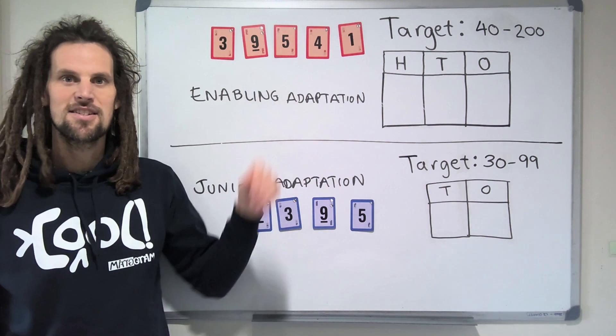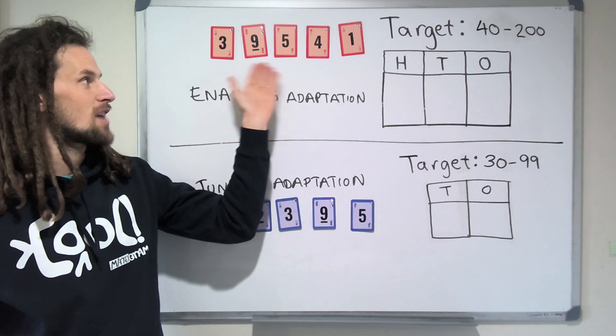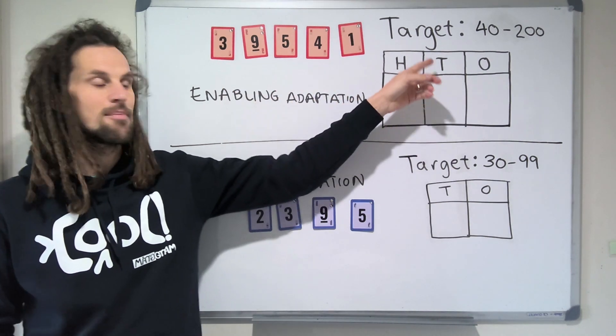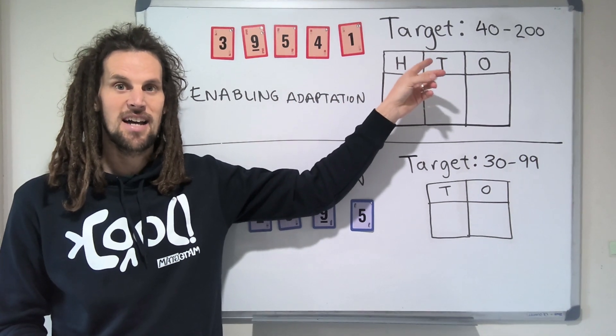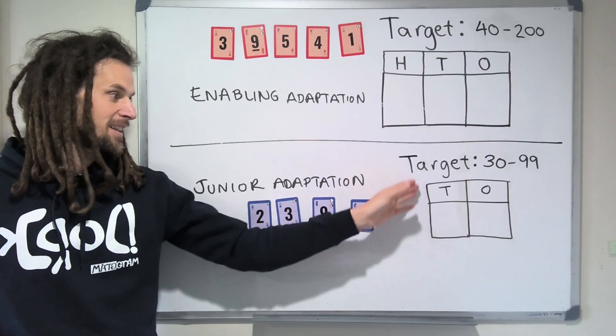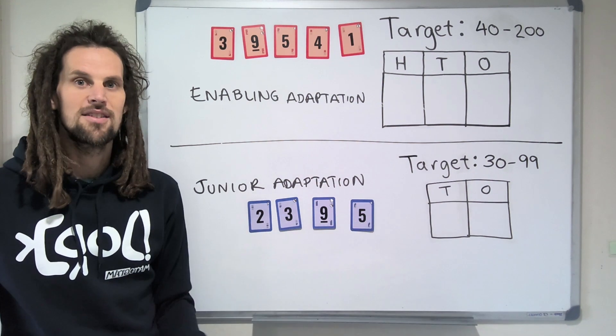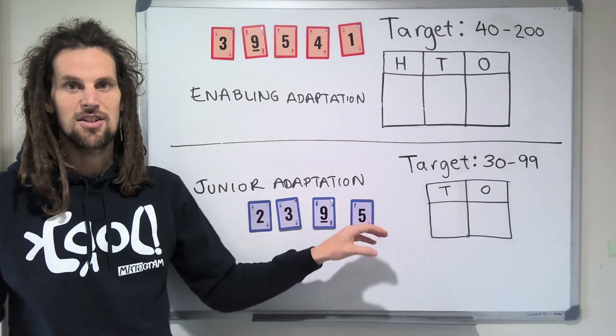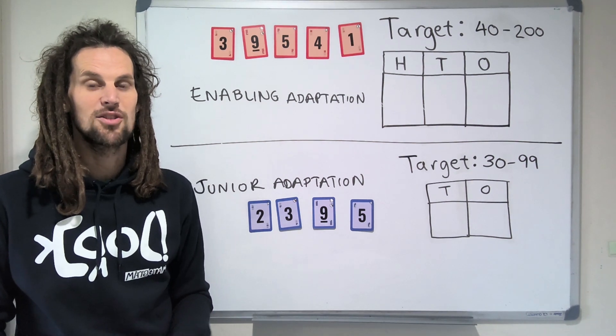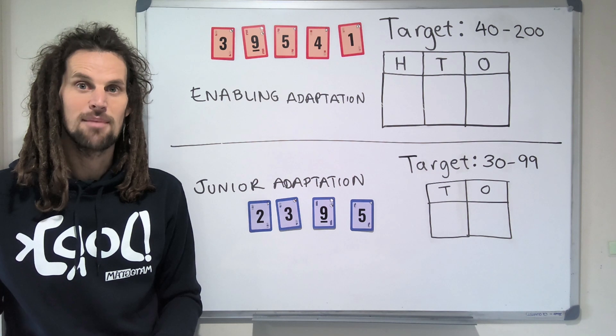Here's two adaptation ideas to make it simpler or more accessible for kids. The first is to just have 5 cards, and then the number between 40 and 200 as the target. The next adaptation would be to get rid of the 100s column altogether, and then only pick 4 cards. Now, with only 4 cards, you don't have as much flexibility, and the choices will become a bit more obvious, but that will still give kids practice at representing numbers differently.